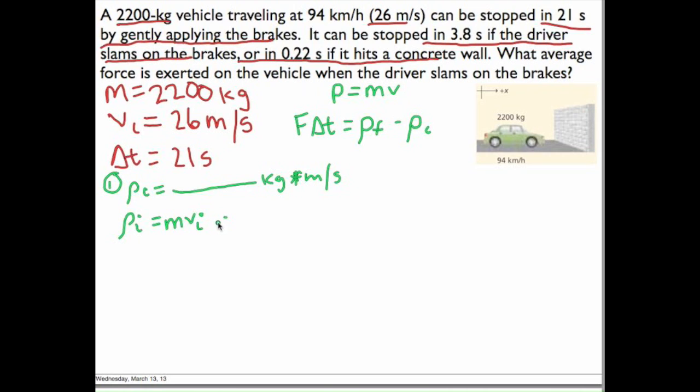So our initial is equal to our mass times our initial velocity. That's just going to be 2200 times our initial speed, which was 26. And then we'll just multiply those guys together, and we'll get a really big number with our units, kilograms times meters per second. Now that we've found that, we need to find our final momentum.